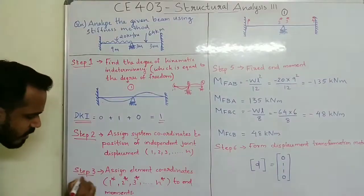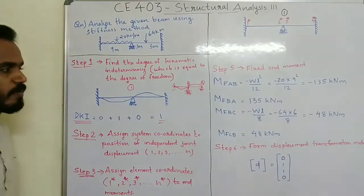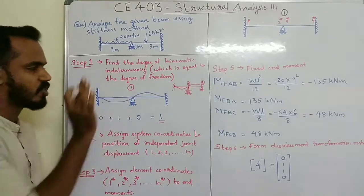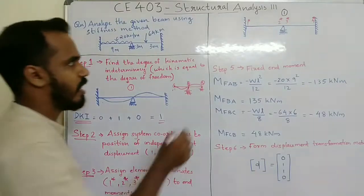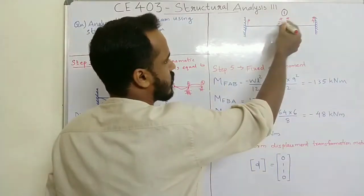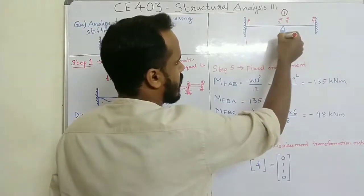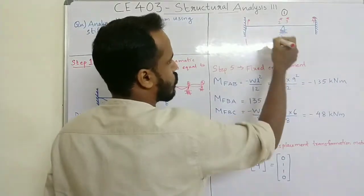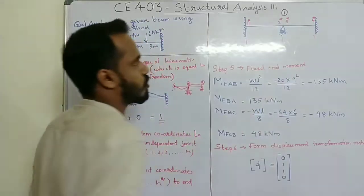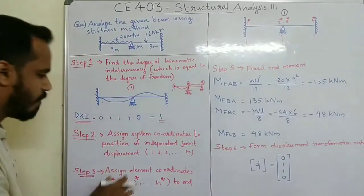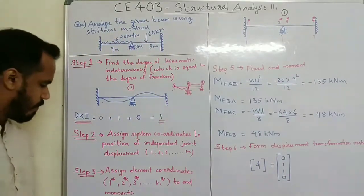Step 3: Assign element coordinates to end moments. The end moments will be assigned element coordinates — that is 1-star, 2-star, 3-star, and 4-star.